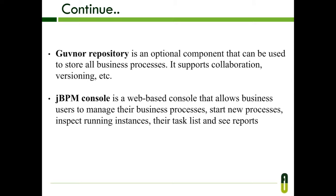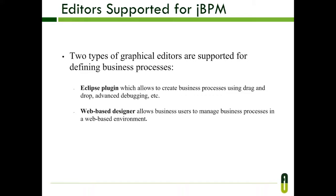The governor repository is an optional component that can be used to store all business processes. It supports collaboration, versioning, etc. The JBPM console is a web-based console that allows business users to manage their business processes, start new processes, inspect running instances, their task list, and see reports. Two types of graphical editors are supported: the Eclipse plugin, which allows creating business processes using drag and drop and advanced debugging, and the web-based designer, which allows business users to manage business processes in a web-based environment.